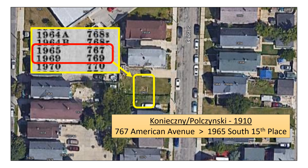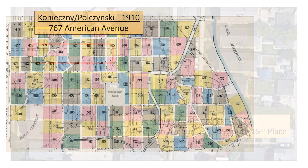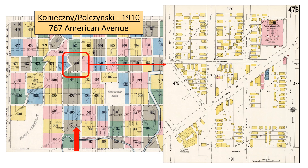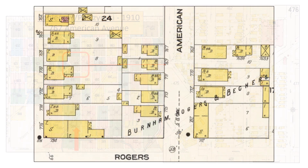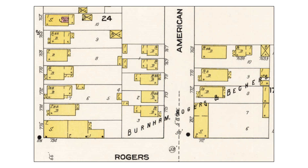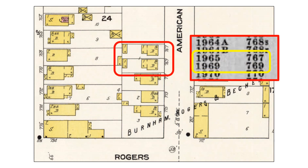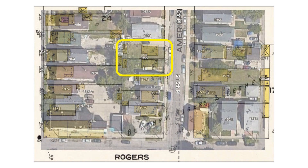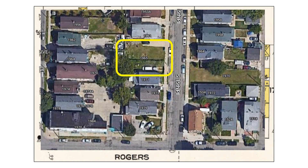First, let's try to find the missing 767 and 769 houses on a Sanborn map. Here we are back on volume 5 of the 1910 Sanborn maps of Milwaukee, where we are looking for 767 American Avenue. Following American Avenue North, we will be looking at sheet 476. Zooming in on map 476, we see where the now missing 767 and 769 were located in 1910. And once again, we can now get a feel for how the neighborhood has evolved over the last 100 years.